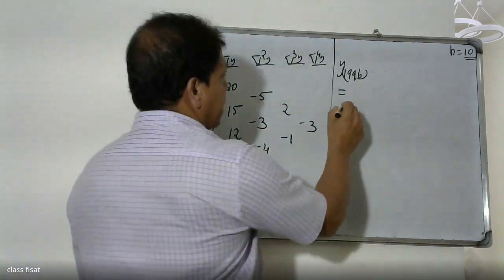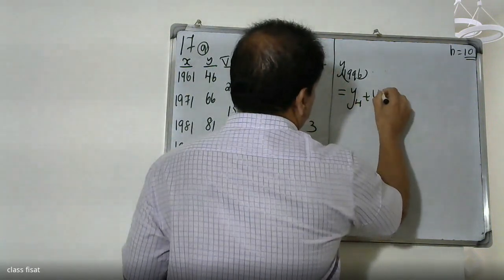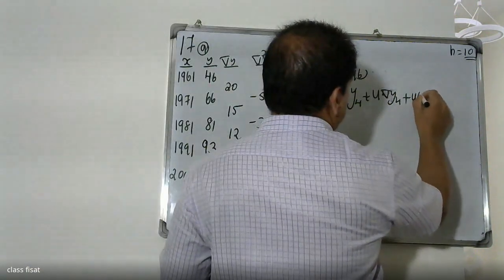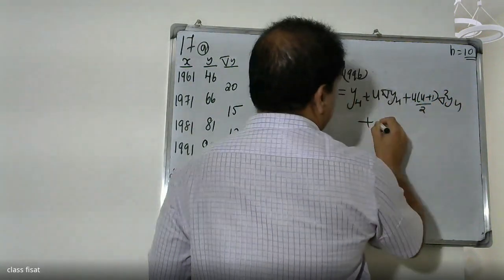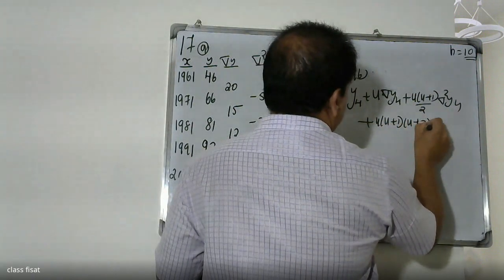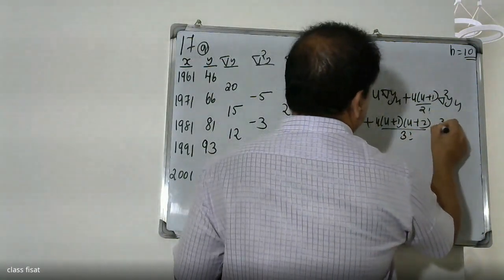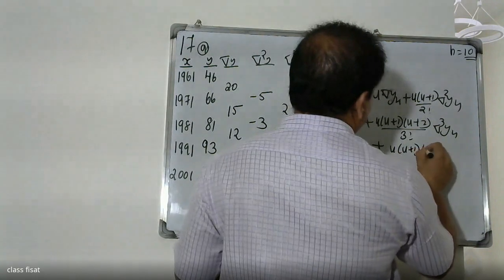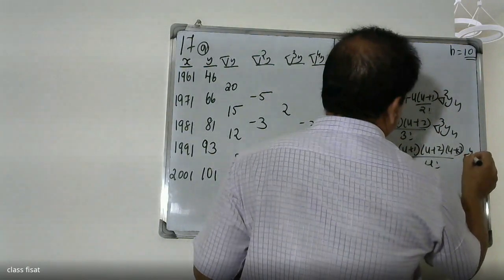Newton's backward interpolation formula is: y = y₄ + u·Δy₄ + [u(u+1)/2!]·Δ²y₄ + [u(u+1)(u+2)/3!]·Δ³y₄ + [u(u+1)(u+2)(u+3)/4!]·Δ⁴y₄.